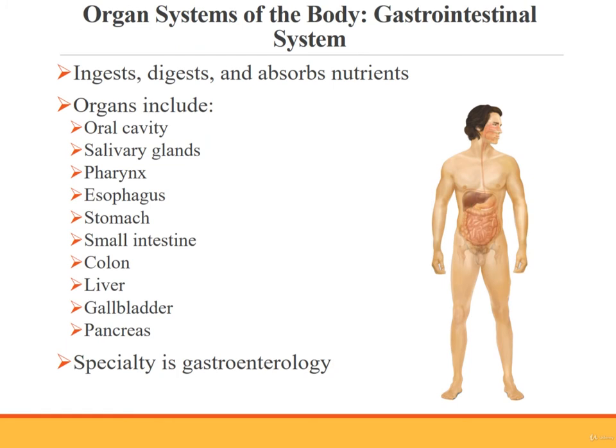The gastrointestinal system, or digestive system, is responsible for ingesting, digesting, and absorbing nutrients. Organs of the gastrointestinal system are the oral cavity, salivary glands, pharynx, esophagus, stomach, small intestine, colon, liver, gallbladder, and pancreas. Gastroenterologists care for the gastrointestinal system. Proctologists also provide care for the system.